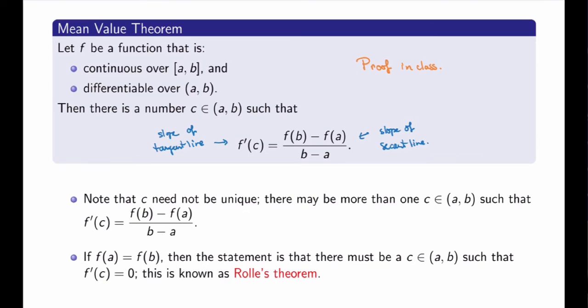A second comment: if the points a and b are such that f(a) equals f(b), then the difference quotient is zero, meaning the secant line is horizontal. The statement then becomes that there must be a c between a and b such that the derivative at that point is zero — in other words, the tangent line is horizontal. This is a special case of the mean value theorem sometimes called Rolle's theorem, but it's really just a particular case of the mean value theorem and doesn't need to be treated separately.